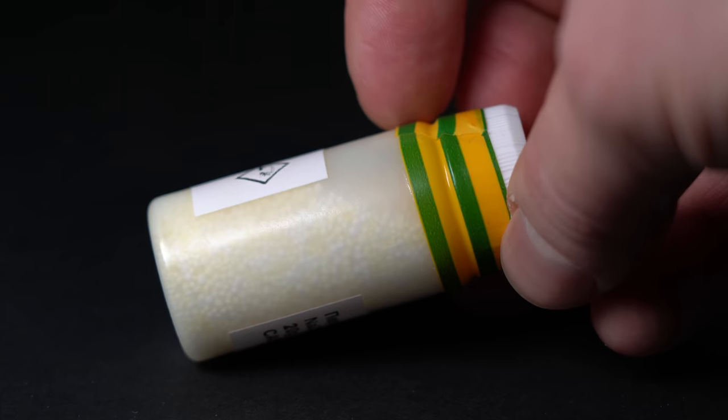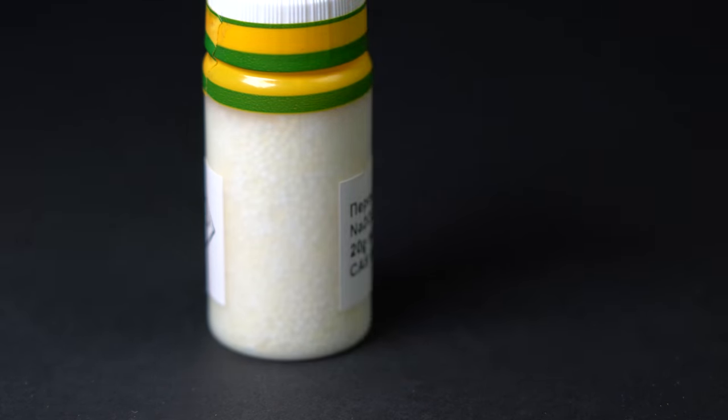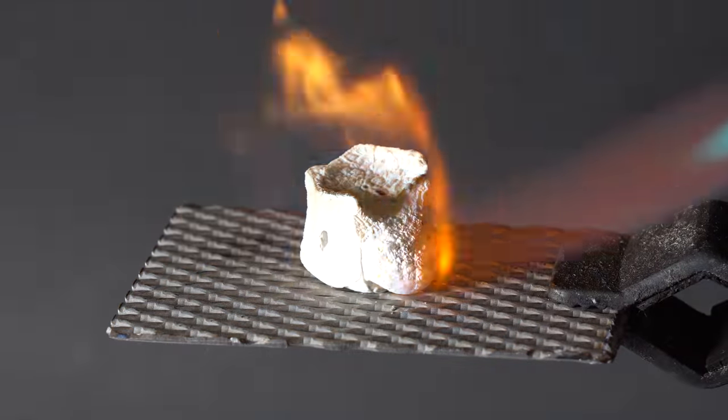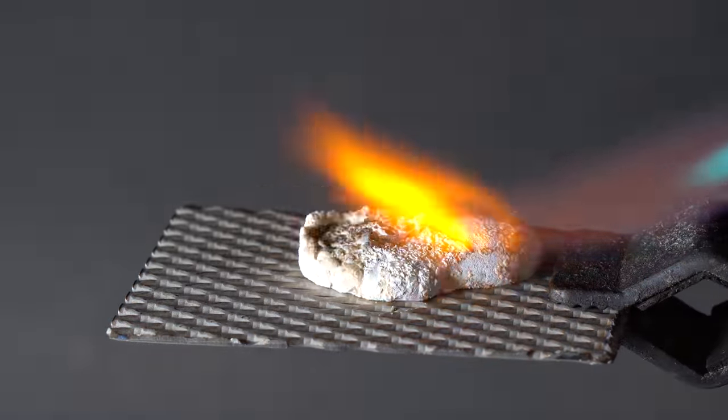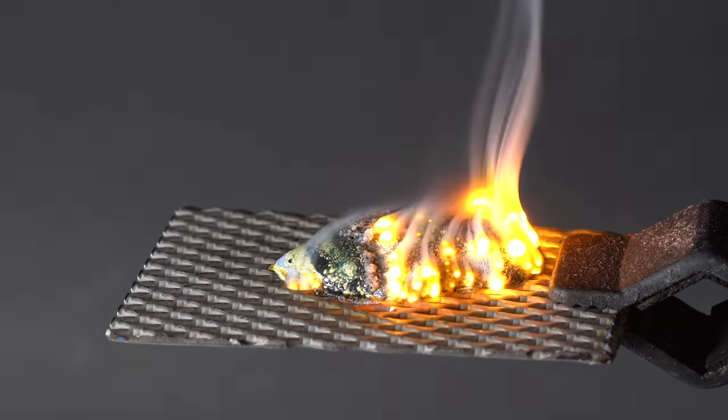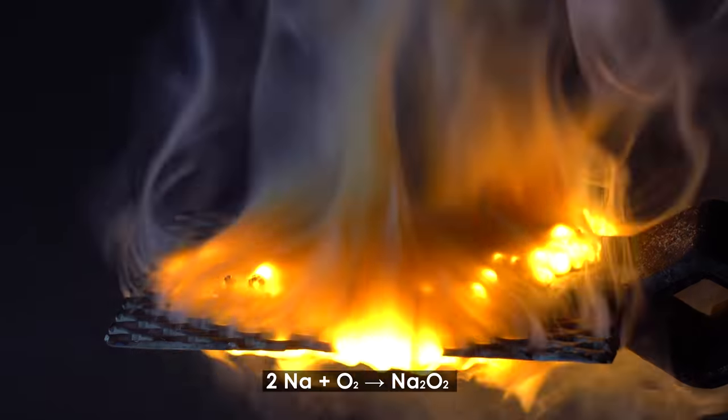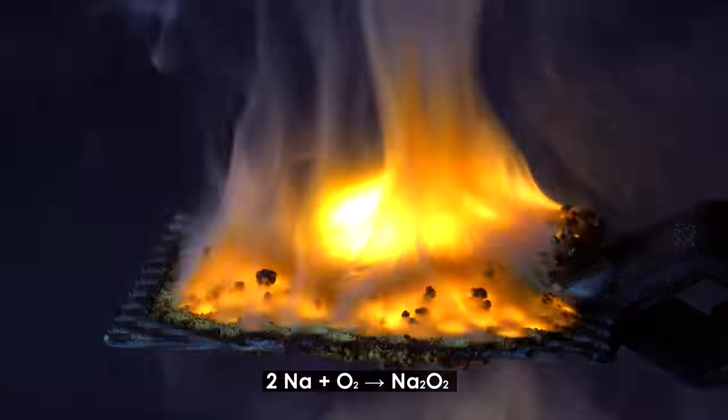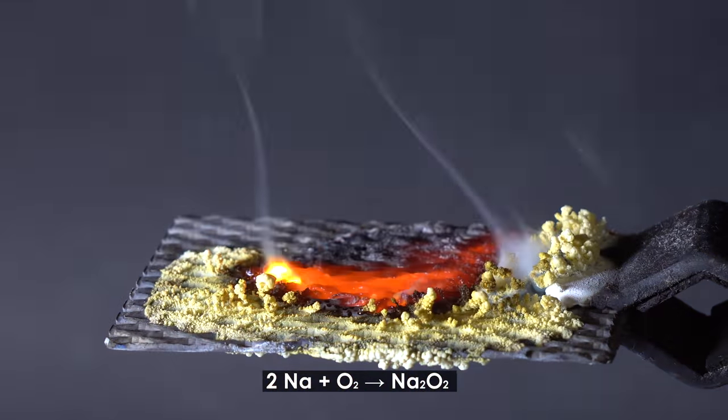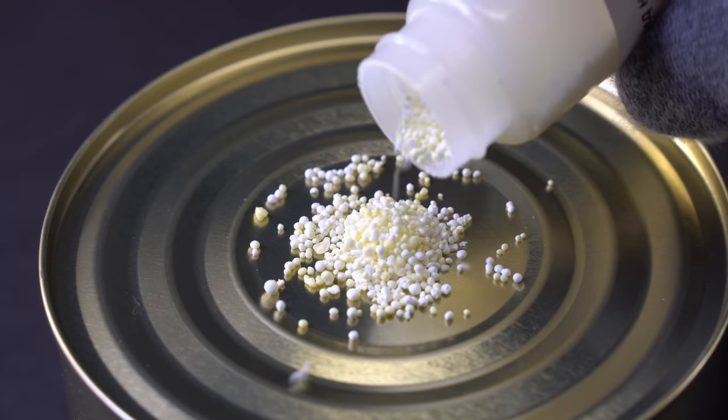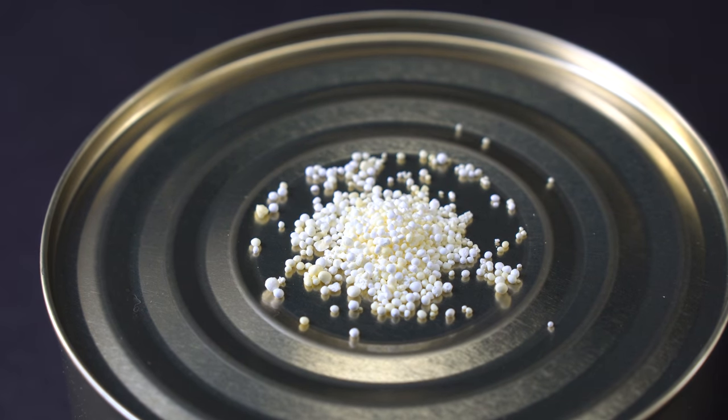These yellow granules called sodium peroxide provide oxygen for breathing to firefighters and rescuers. You can obtain this substance if you ignite such an alkali metal as sodium in air. Because of its extreme chemical activity, burning sodium can attach two oxygen atoms, creating sodium peroxide.